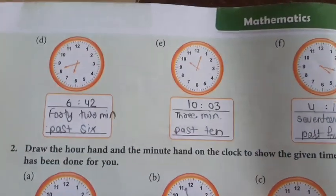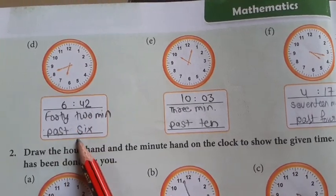Now, let's do next. What is next? 6 hours 42. So, 42 minutes past 6.